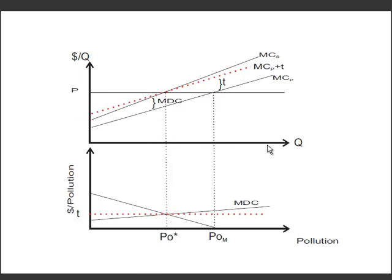We can also show how this tax would play out in our externality figure. Here we've got a tax — a dollar tax, this distance — for each unit of production, since every unit of production yields one unit of pollution. That simply shifts our cost of producing upward by that amount. And if the tax is set exactly right, you can move that production cost curve upward until the intersection of the marginal cost to the firm plus the tax crosses the price at exactly PO*, achieving the socially optimal level.